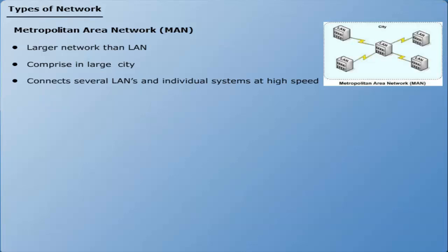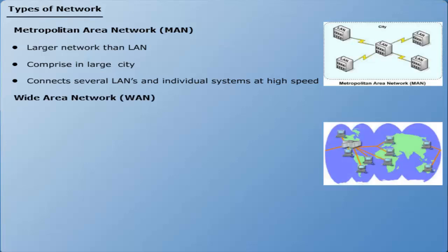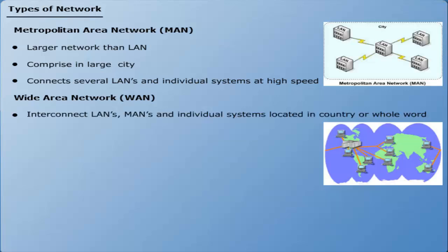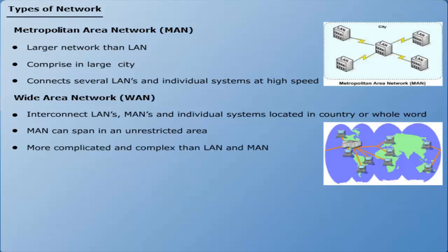A Wide Area Network (WAN) interconnects LANs and MANs. A WAN may be located within a country or it may interconnect the whole world. WANs can span an unrestricted geographical area. They are more complicated and complex than LANs and MANs, and the WAN technology is expensive.